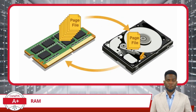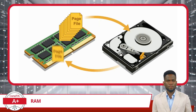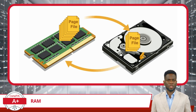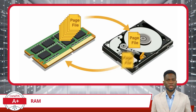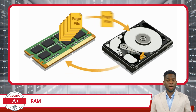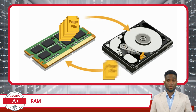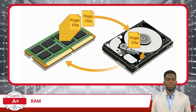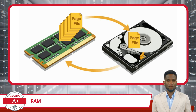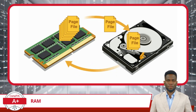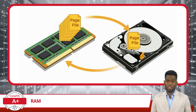Virtual memory involves a page file, also known as a swap file or virtual memory file. This file is a designated area on the hard disk that acts as a repository when the physical RAM becomes fully occupied. When a program requires more memory than there is available RAM, the operating system temporarily stores the less frequently used or inactive pages of that program in the page file, freeing up space in physical RAM for more actively used pages.